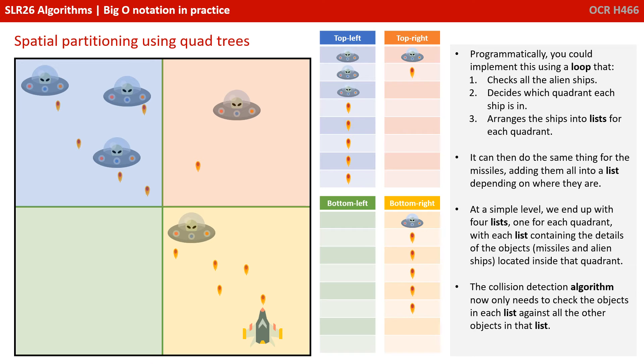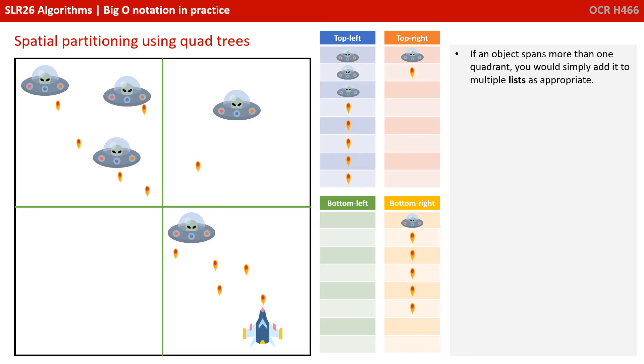The collision detection algorithm now only needs to check the objects in each list against all the other objects in that list. If an object spans more than one quadrant, you could simply add it to multiple lists as appropriate.